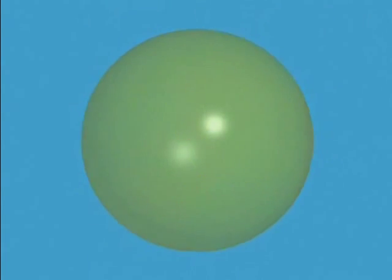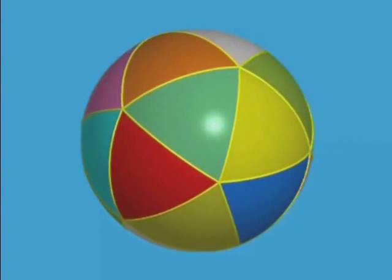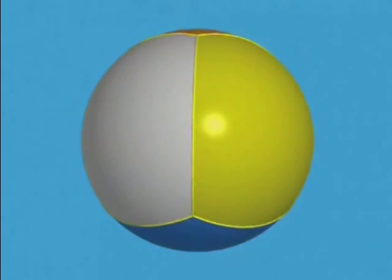But now, to determine the position of a point on this sphere, we need three numbers. This means that the sphere has dimension three, and of course we will call it S3.